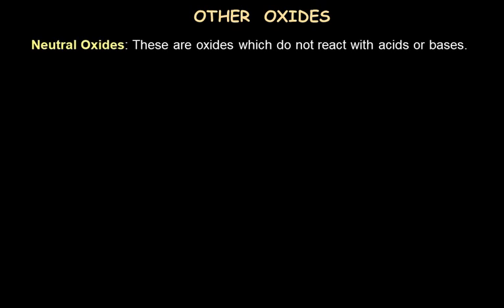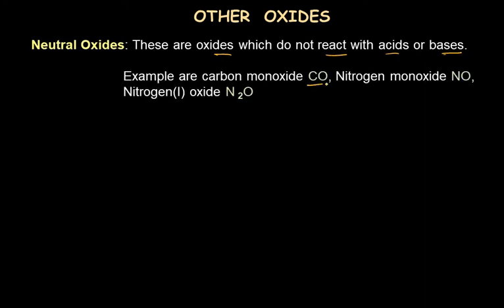The other type of oxide is neutral oxides. Neutral oxides are oxides which do not react with either acids or bases — they do not react with any of these substances. Such oxides are called neutral oxides. For example, carbon monoxide, nitrogen monoxide NO, or nitrous oxide N₂O. Although these are non-metal oxides — which are supposed to be acidic in nature — these are the few oxides which are not acidic and are instead neutral.